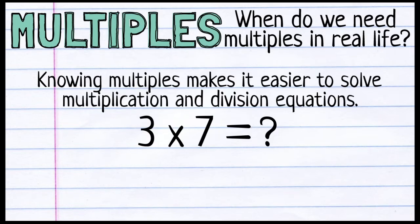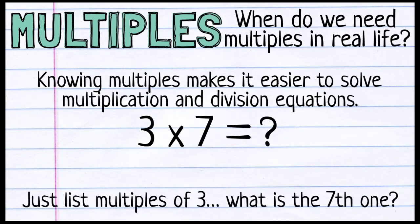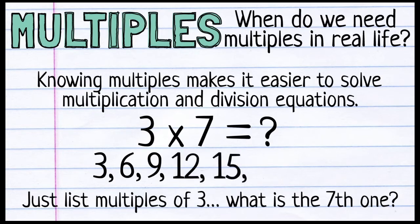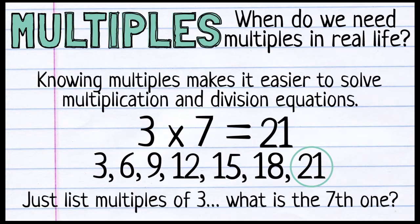Multiples can also make it easier to solve multiplication and division equations. If I'm trying to figure out what 3 times 7 is, I can just list multiples of 3. When I list them out, I'm looking for which multiple is the 7th one on the list. Let's find out. 3, that's the first multiple of 3. 6 is the second one. 9, that's the third one. 12 is the fourth multiple on my list. 15, that's the fifth one. 18 is the sixth multiple of 3. And 21. 21 is the seventh multiple on my list when I listed out multiples of 3. And that means that 3 times 7 is 21.